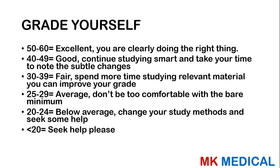It's now time to grade yourself. If you scored between 50 to 60, you're excellent — keep doing what you're doing. Between 40 to 49, study smart and notice subtle things. Between 30 to 39, spend time reading more relevant material. Between 25 to 29, don't be too comfortable with the bare minimum. Between 20 to 24, that's below average — change your study methods and seek help. Anyone who scored below 20, please reach out in the comment section below.